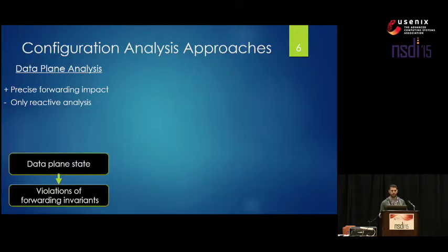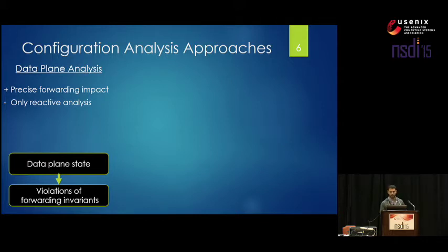So how do we actually find these bugs? There have been two prior threads of research. The first is data plane analysis, embodied in tools such as AntEater and header space analysis. They start from a data plane snapshot taken from routers in a running network, and since you have the data plane with well-understood semantics, you can check any forwarding property using the constraint solver of your choice. The problem is that since you have to pull this snapshot from a running network, you can only do a reactive analysis.